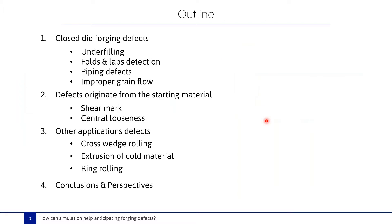This is the outline of this webinar. First, I will start by showing how the simulation can predict closed die forging defects — for example, underfilling, fold and lapse detection, piping defects, and improper grain flow. The second part is dedicated to defects originating from the starting material, such as shear mark and central looseness. In the last part, some defects detected in cross wedge rolling, extrusion, and ring rolling will be investigated.